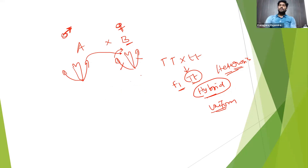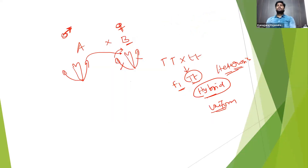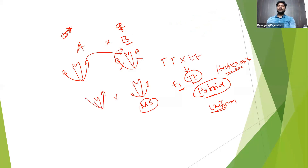So this naturally occurring male sterility system — how can we use it for hybrid seed production? The answer is very simple. Since male sterile plants contain sterile male parts, they cannot fertilize their own ovule. So simply, we can use this male sterile plant as a female parent in hybrid seed production and cross it with the normal fertile parent. No need for emasculation — no need to remove the male part of the flower, because they are already sterile. This is the only application of male sterility in crop breeding.